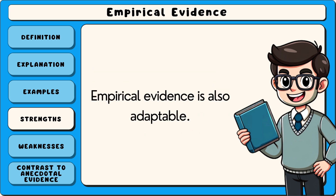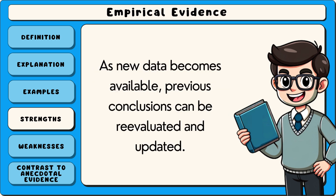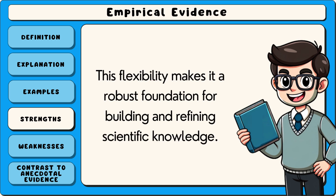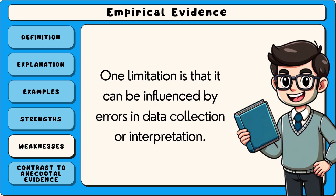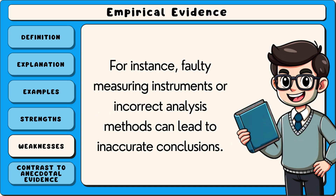Empirical evidence is also adaptable. As new data becomes available, previous conclusions can be re-evaluated and updated. This flexibility makes it a robust foundation for building and refining scientific knowledge. However, empirical evidence is not without its weaknesses. One limitation is that it can be influenced by errors in data collection or interpretation. For instance, faulty measuring instruments or incorrect analysis methods can lead to inaccurate conclusions.